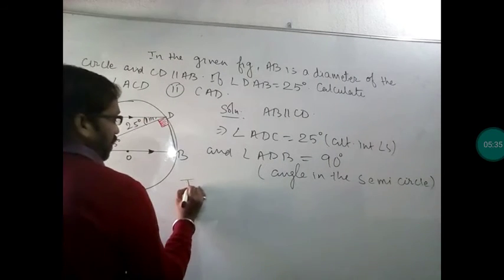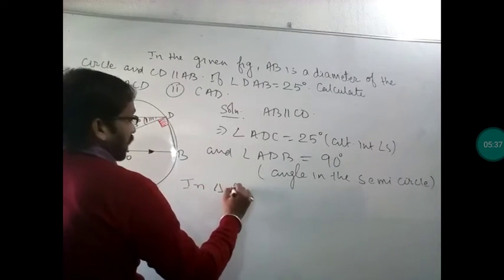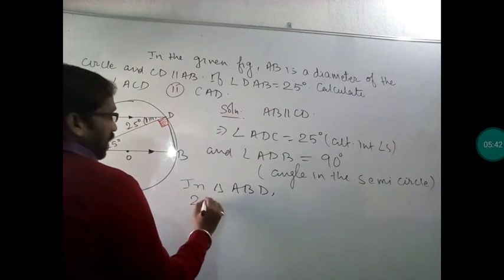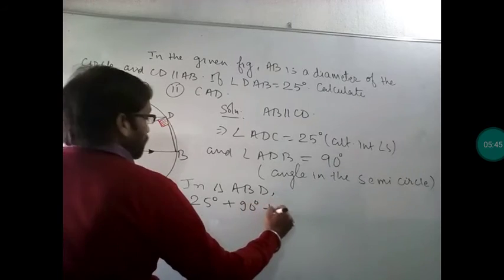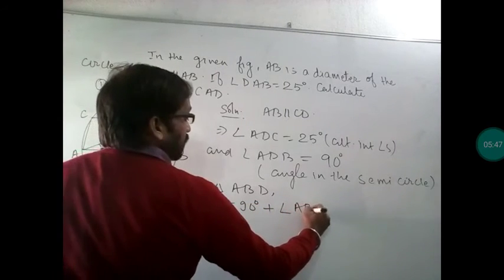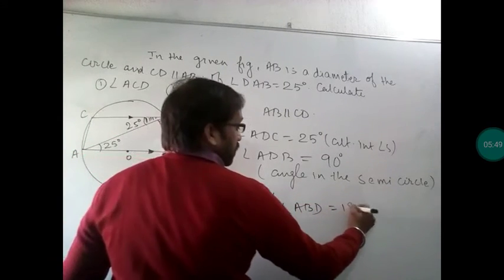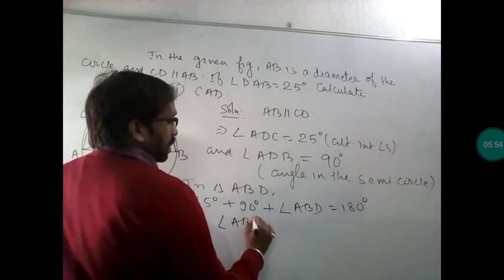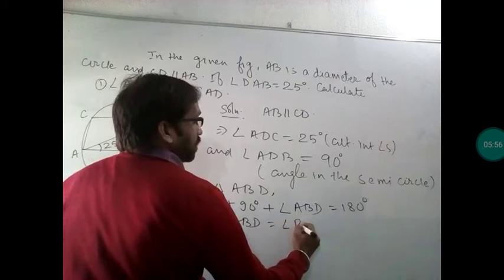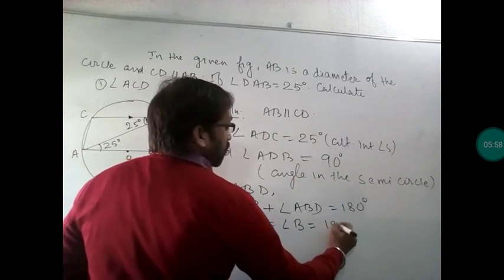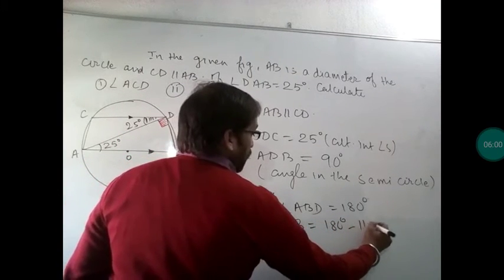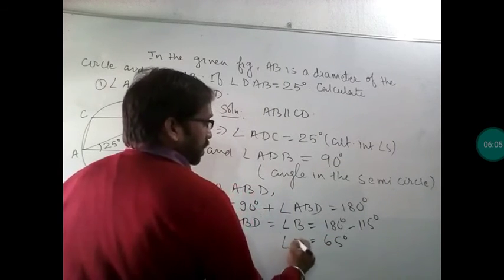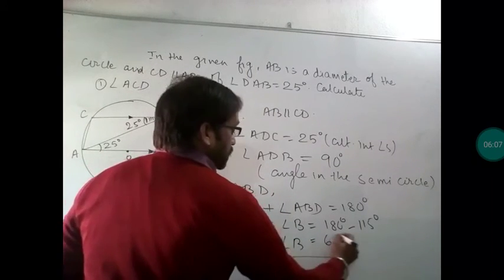In triangle ABD: angle DAB is 25 degrees, angle ADB is 90 degrees, so 25 plus 90 plus angle ABD equals 180 degrees. That means angle ABD equals 180 minus 90 minus 25, which is 65 degrees.